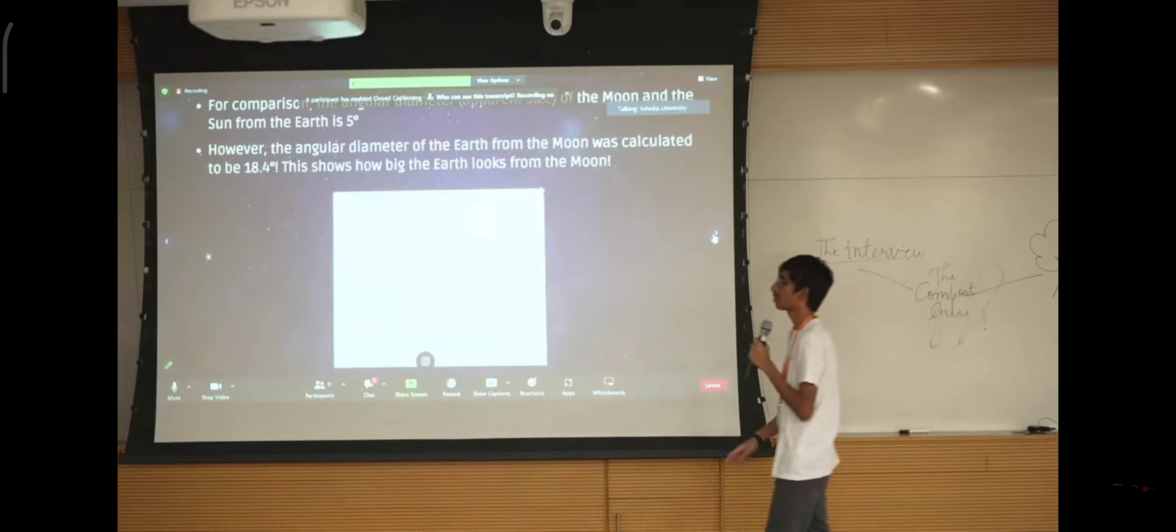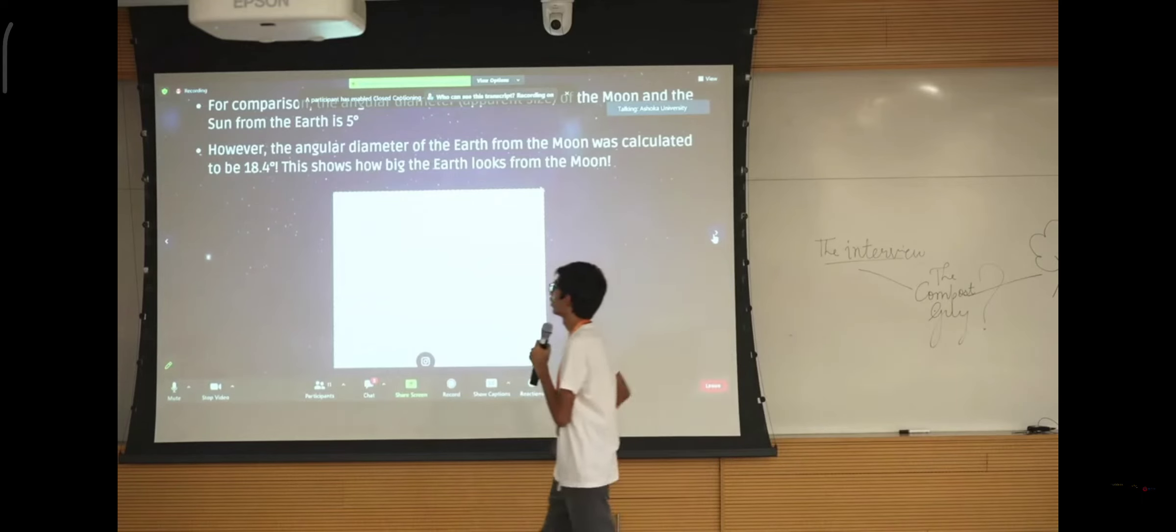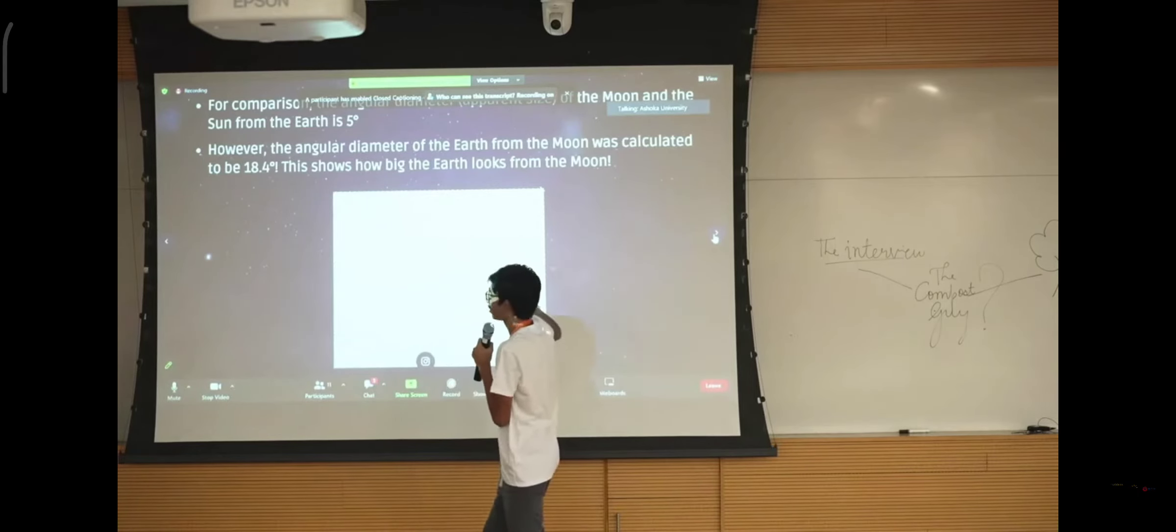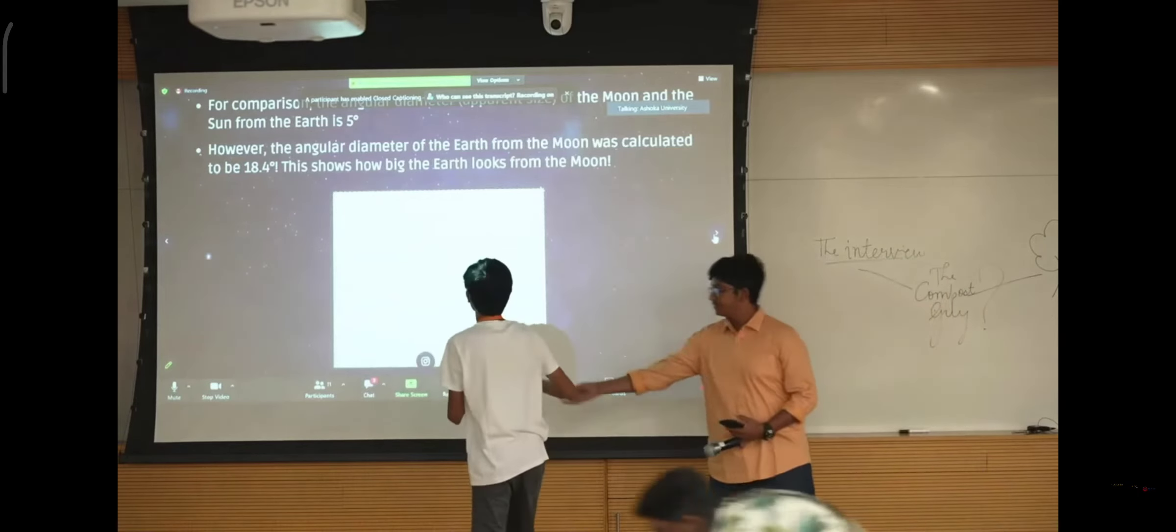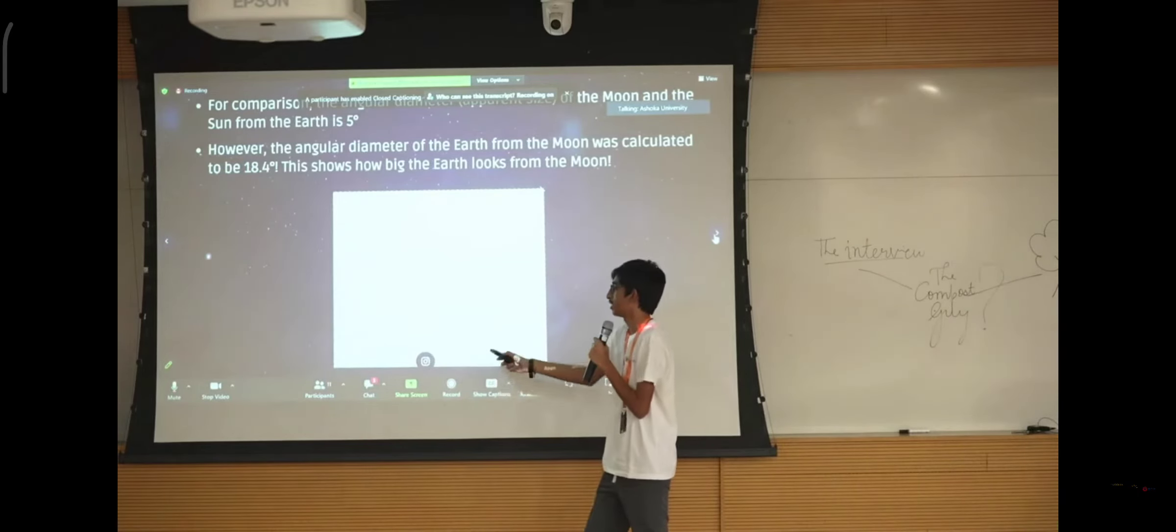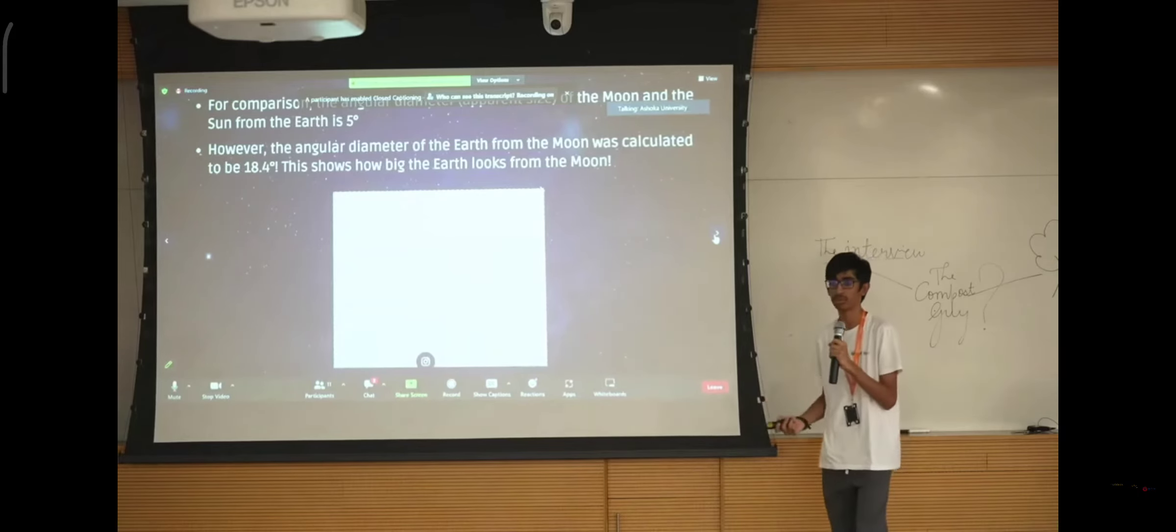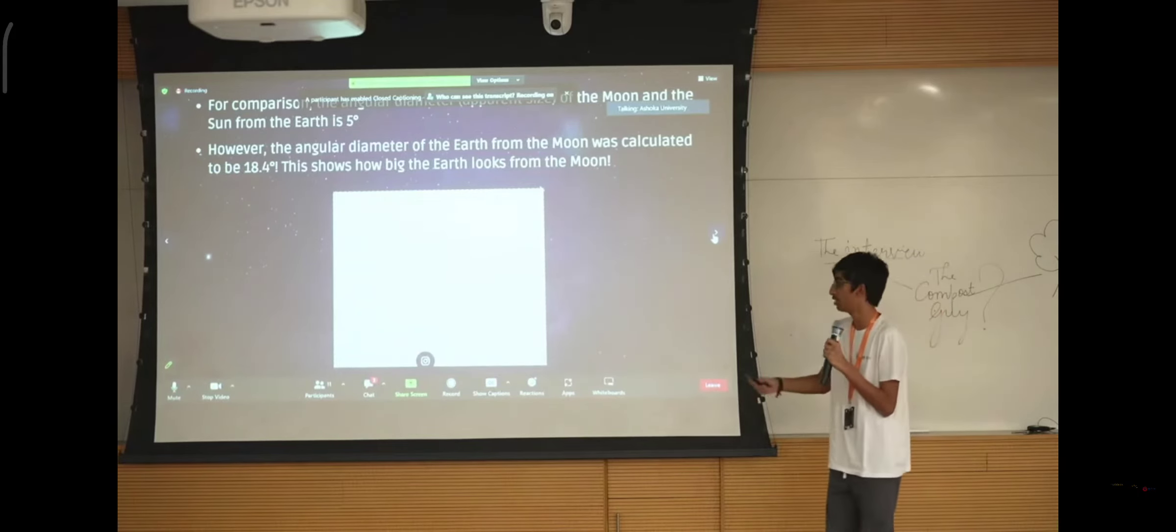Okay so based on the information given in the story, we are able to draw this diagram where this is her arm and this is her hand. And using that information, and we know that the earth is being covered from her perspective. So using that information, we are able to draw a 90 degree triangle and use tan inverse, like shown over here, to calculate the angular diameter of the earth from the moon, which is 18.4 degrees. Just for comparison, the angular size of the moon from the earth is approximately 5 degrees, same thing with the sun. The earth, however, from the moon is 18.4, which shows you how big the earth is from the moon.